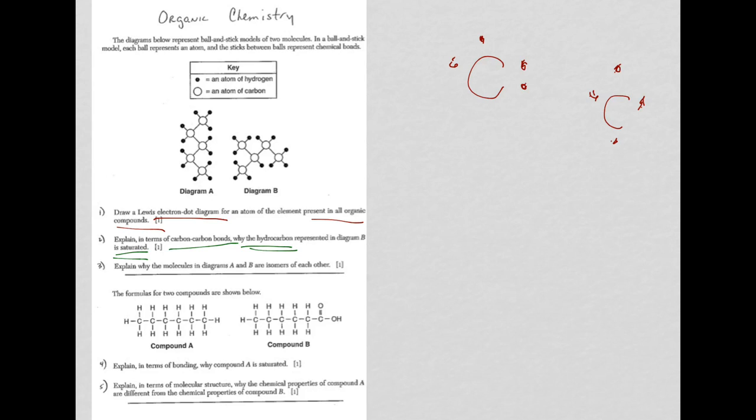So, why is diagram B considered saturated? And it's because you have all single bonds. You probably could just say all single bonds, but it's all single carbon-carbon bonds for question two.